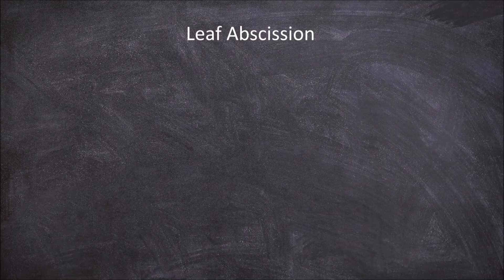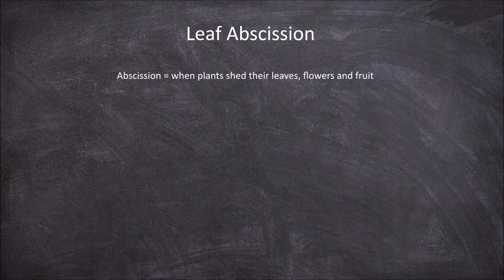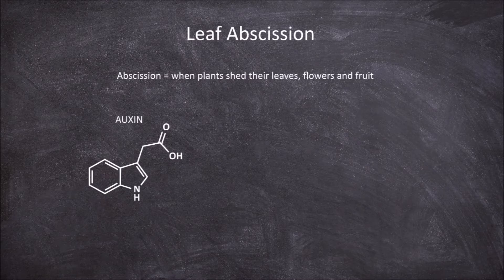In this video we're going to go over the process of abscission in leaves. Abscission is the term used when plants shed their leaves, flowers and fruit. The process of abscission in leaves involves the competing actions of two plant hormones, auxin and ethylene.